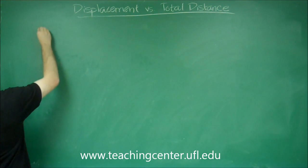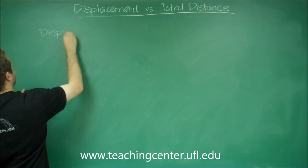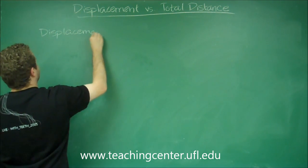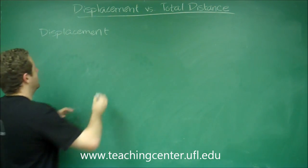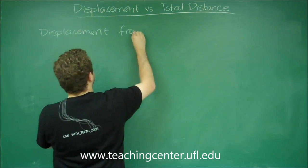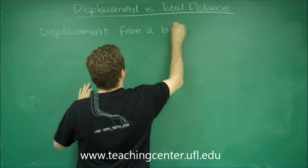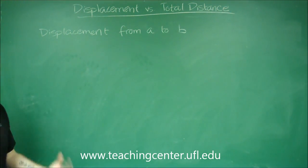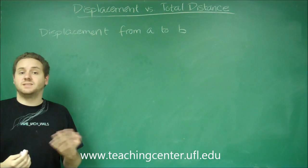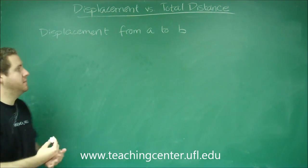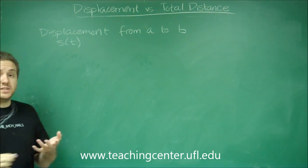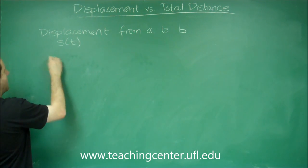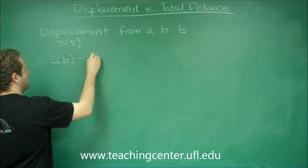The displacement of an object - now you're going to have to have an interval here - so from a to b is simply its distance at b minus its distance at a. Many times we have our function as s of t for our position function, so we would just do s of b minus s of a.